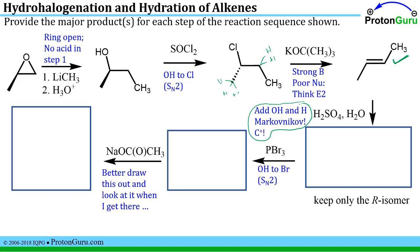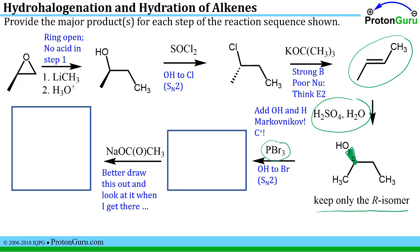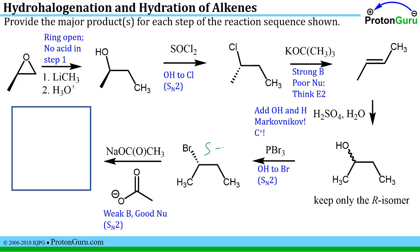Now for the hydration reaction: add H and OH Markovnikov. Either carbon of the symmetric double bond gives the same secondary carbocation. It won't rearrange because there is no more substituted site adjacent. The OH attaches to the more substituted carbon. This is a stereogenic center, but we started with achiral reagents, giving a racemic mixture. The instructions say to keep only the R isomer. The next step uses phosphorus tribromide to convert OH to Br via SN2, inverting the R isomer to the S isomer.